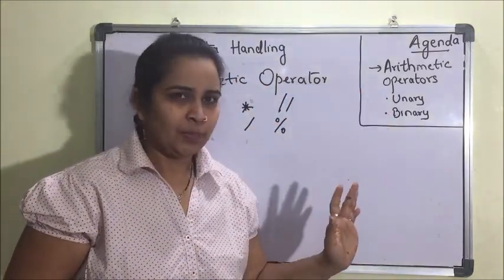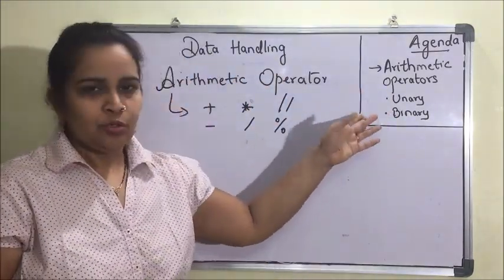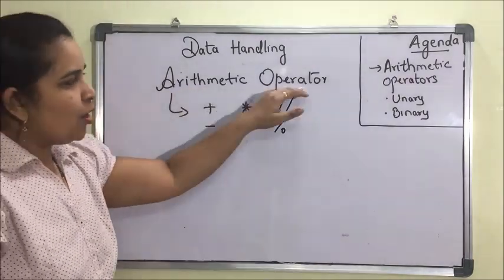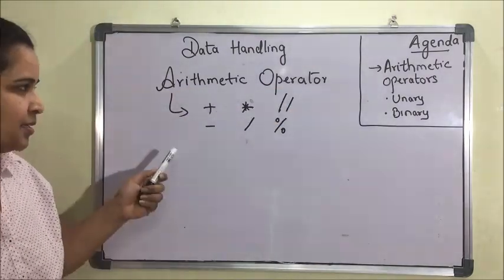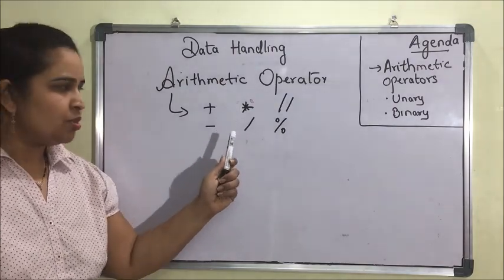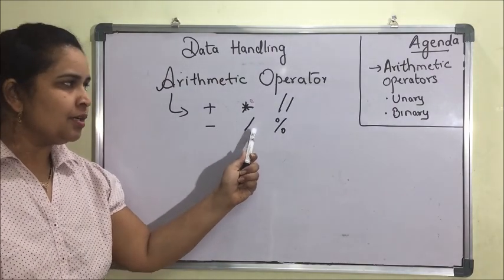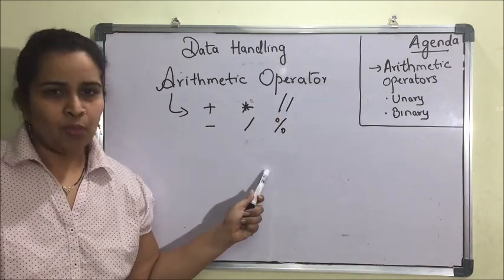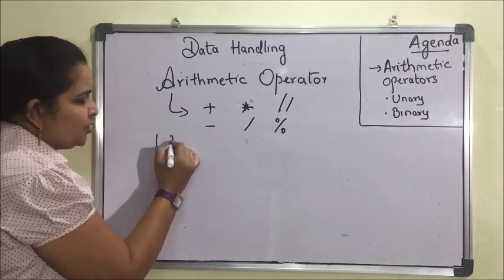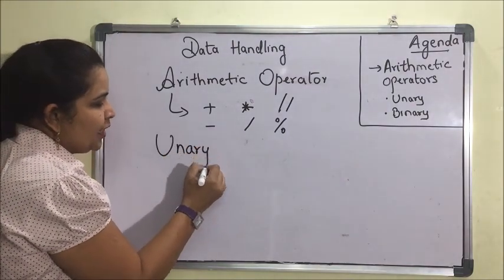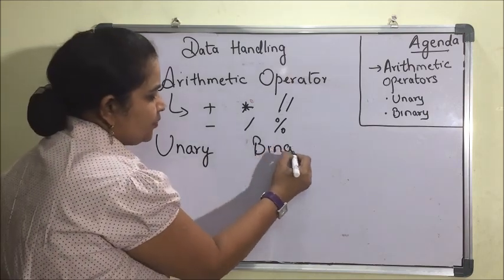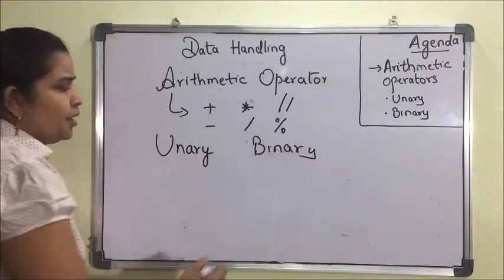This chapter will contain only arithmetic operators — that is unary and binary operators. The basic arithmetic operators are: plus, minus, multiplication, division, floor division, and modulus. Arithmetic operators are further divided into unary and binary operators.